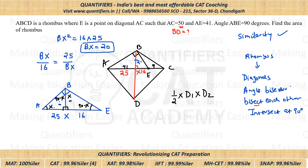BX = 20, so XD = 20 as well since diagonals bisect each other. Therefore the full diagonal BD = 40. One diagonal was given as 50, the other diagonal we found is 40. So the area = ½ × 50 × 40 = 1000.